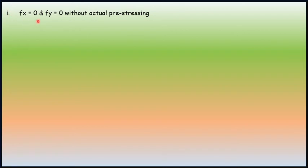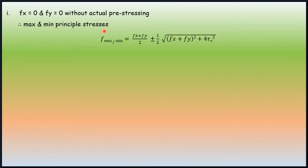Moving to first part of the solution. fx equals 0 and fy equals 0 without actual pre-stressing. Therefore maximum and minimum principal stresses is given by fmax/min equals (fx plus fy) divided by 2 plus or minus half of square root of (fx plus fy) whole square plus 4τv square.